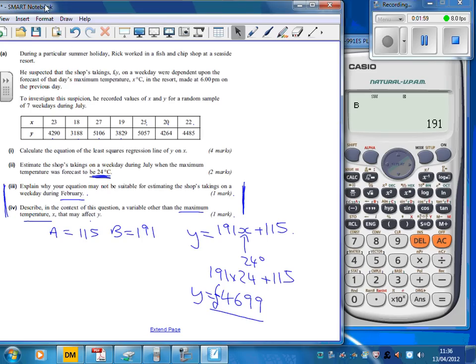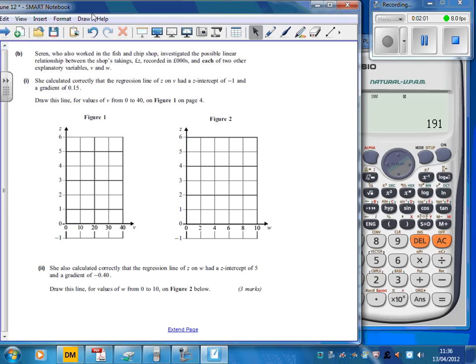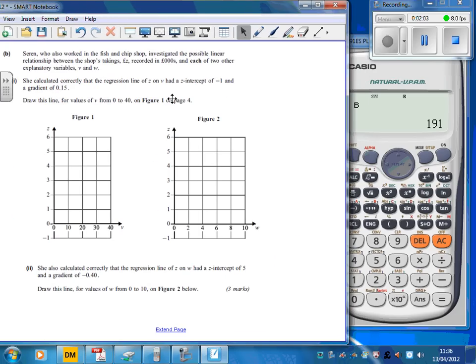On to the second part of the question - they've decided to look at fish and chip shops instead. They've done the calculation for us already. We've got the equation z equals 0.15v take away 1, and we need to put that on this diagram.